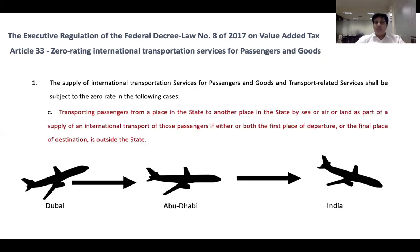The third point: transporting passengers from a place in the state to another place in the state by sea, air, or land, as part of the supply of international transport of those passengers, if either or both the first place of departure or the final place of destination is outside the state. For example, if your flight goes from Dubai — which is within the state — to Abu Dhabi, also within the state, and from there to India, the complete transaction is still classified as zero rated.